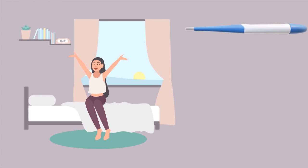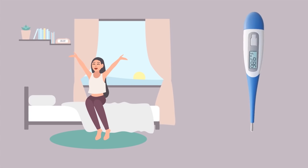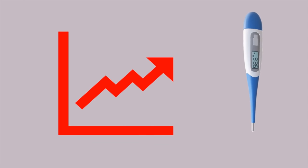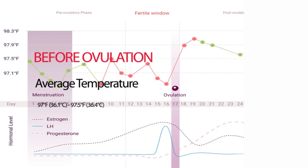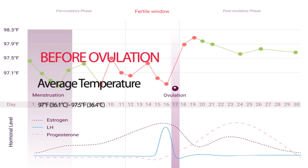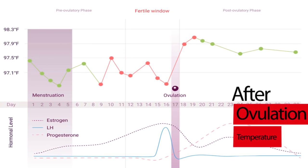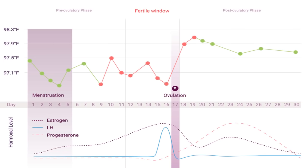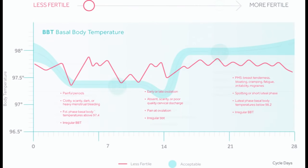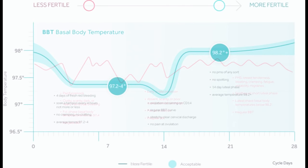Take the temperature at the same time each day before getting out of bed. Record the results on a chart. Before ovulation, the basal body temperature averages between 36.1 and 36.4 degrees Celsius. After ovulation, it rises to about 36.4 to 37.0 degrees Celsius. This slight increase of 0.3 to 0.6 degrees Celsius in temperature is due to the increase in progesterone hormone.